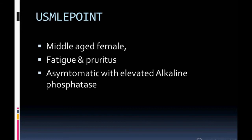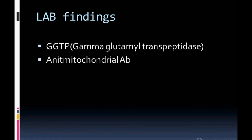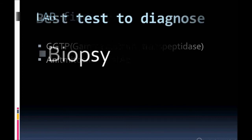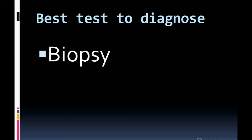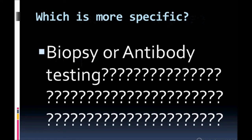Usually they give the history of an asymptomatic patient with increased alkaline phosphatase. This is very important. Other lab findings to look for beyond alkaline phosphatase: GGTP (gamma-glutamyl transferase) is elevated, and anti-mitochondrial antibodies are very important. The best test to diagnose PBC is a biopsy.